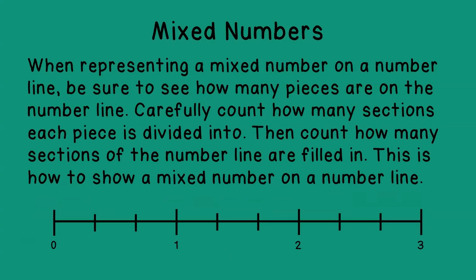Now when representing a mixed number on a number line, be sure to count how many pieces are on that number line. And then also make sure you carefully count how many sections each piece is divided into. Then after you've done that, count how many sections of the number line are filled in, and this is how you show a mixed number on a number line. So in our model down below, you can see that it's representing 3 pieces. We go from 0 to 3, and each of those pieces is divided into 3 sections. So our denominator is going to be thirds, because we divide it into 3.